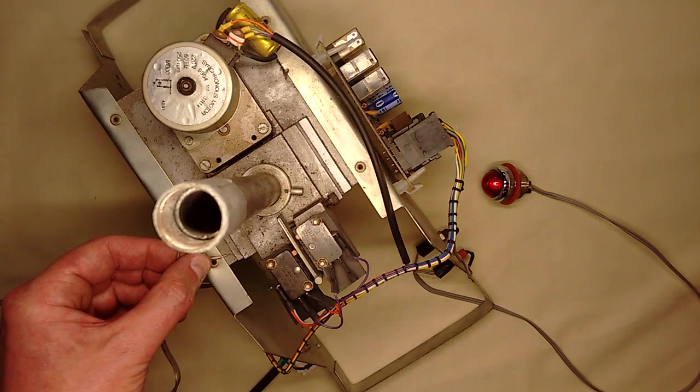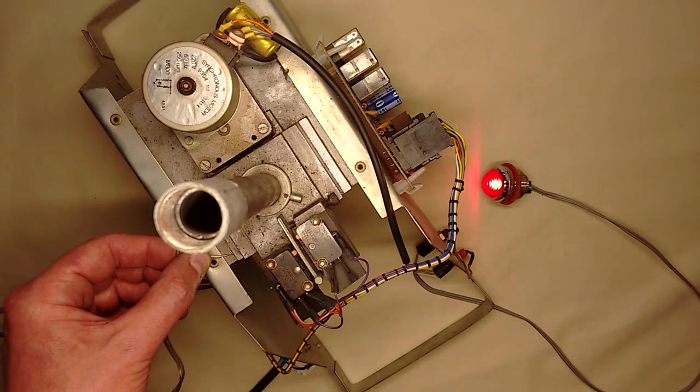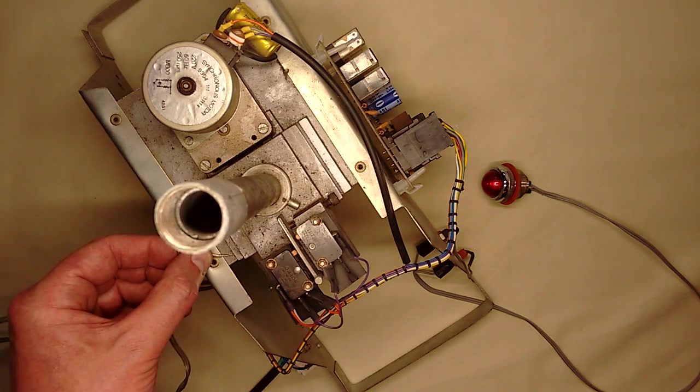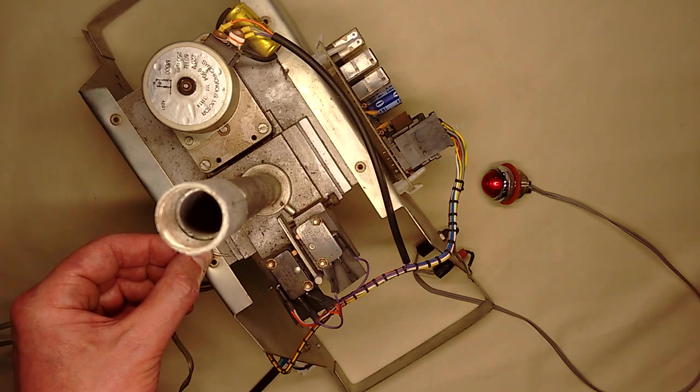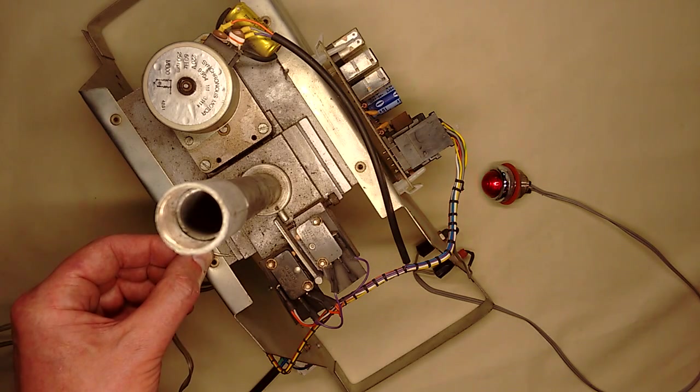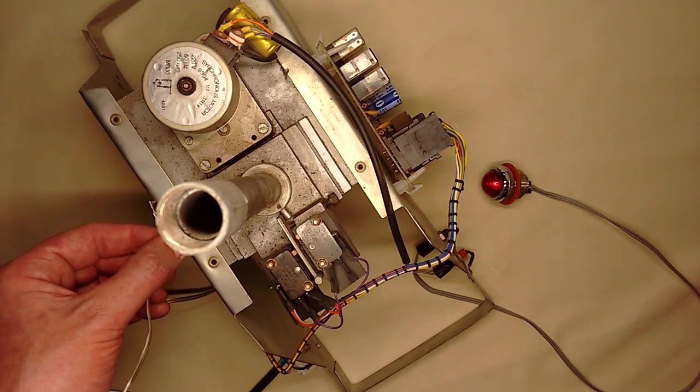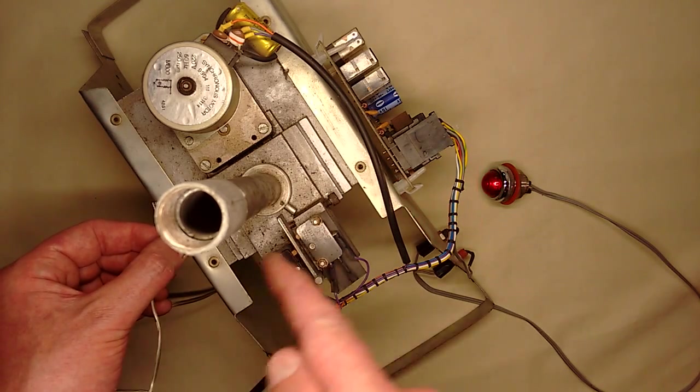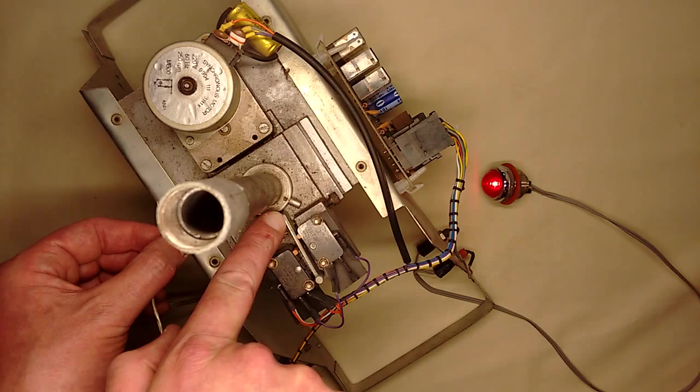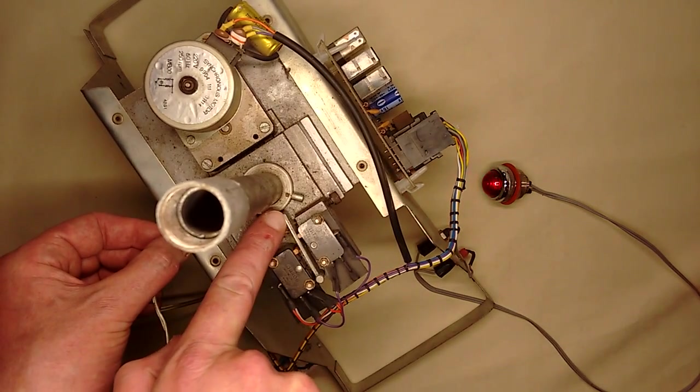If I connect one of these wires to ground, it will run in a particular direction until it reaches this end limit and hits these switches here. And then it will stop. And if you run it the other direction with the other wire, it would then rotate around to the other side until it hit this limit. And that would stop it as well.